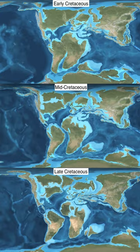The high sea level and warm climate of the Cretaceous meant large areas of the continents were covered by warm, shallow seas, providing habitat for many marine organisms. The Cretaceous was named for the extensive chalk deposits of this age in Europe, but in many parts of the world the deposits from the Cretaceous are of marine limestone, a rock type formed under warm, shallow marine circumstances. Due to the high sea level, there was extensive space for such sedimentation. Chalk consists of coccoliths, microscopically small calcite skeletons of coccolithophores, a type of algae that prospered in the Cretaceous seas.